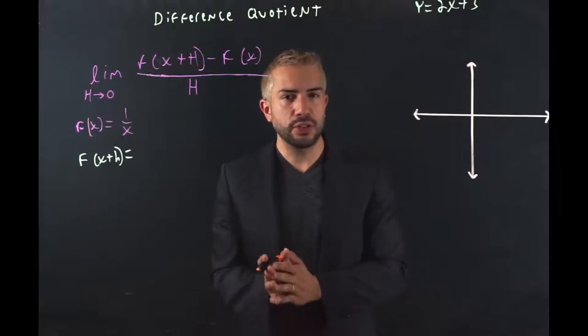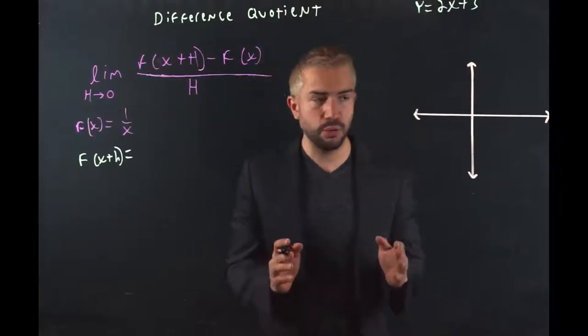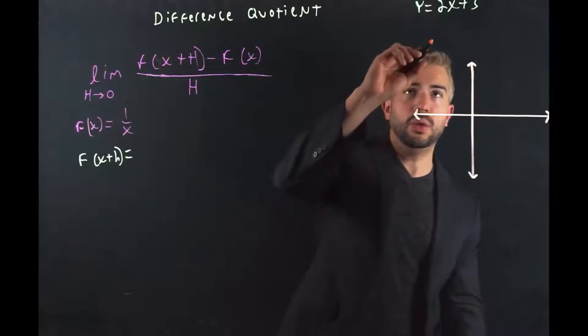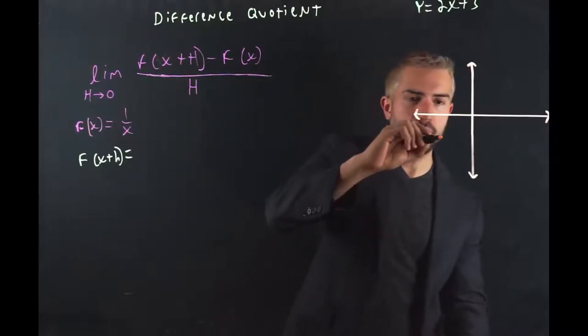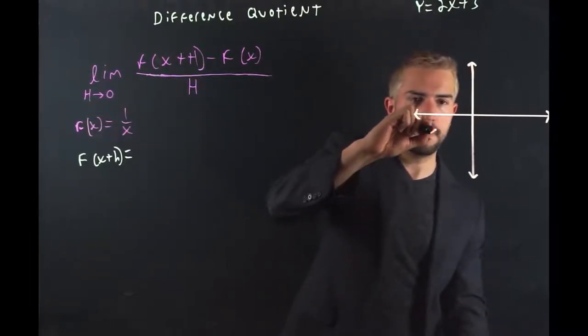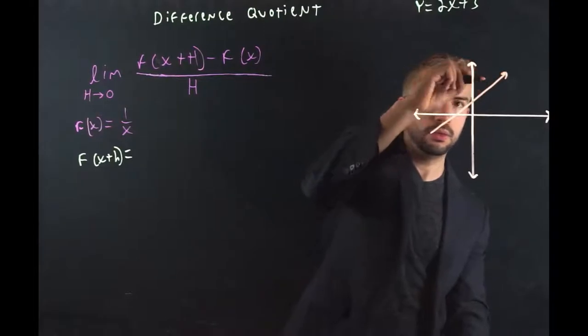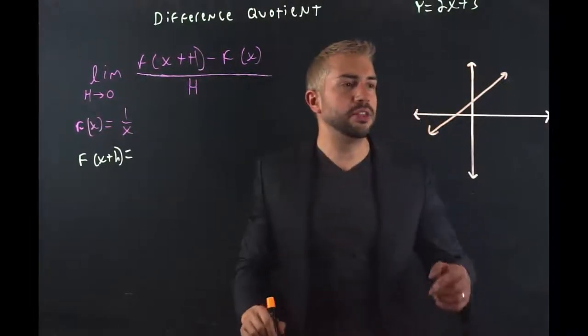Slope, if we're going to talk about linear functions, really quite easy. Let's say we want to graph 2x plus 3, it's going to look something like this. That's 2x plus 3.